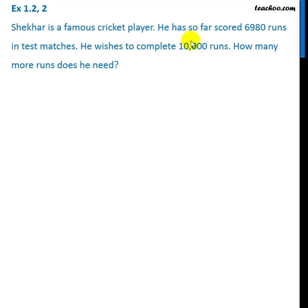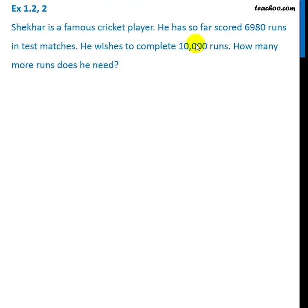In this question, Shekhar has scored 6,980 runs. He wishes to complete 10,000 runs. So how many runs does he need? He needs the number of runs he wishes to complete minus the number of runs he has — that is 10,000 minus 6,980.